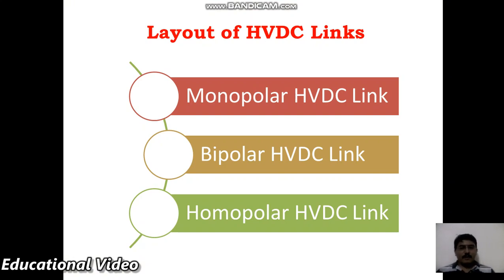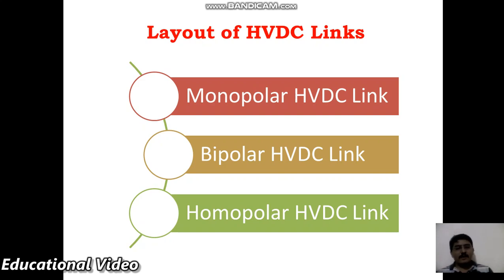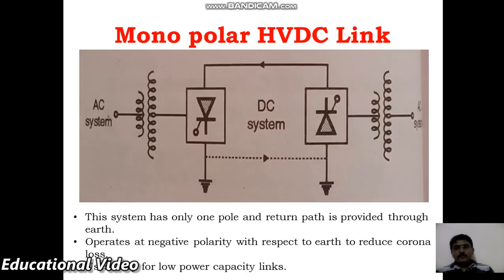The different layouts of HVDC links are: monopolar HVDC link, bipolar HVDC link, and homopolar. As the name suggests, monopolar includes one conductor, bipolar includes two conductors, while homopolar HVDC link has two conductors of the same polarity. The monopolar HVDC link uses a single conductor — one pole — and the return path is provided through the earth. It operates at negative polarity with respect to earth to reduce corona loss.